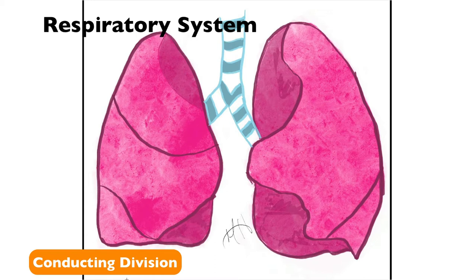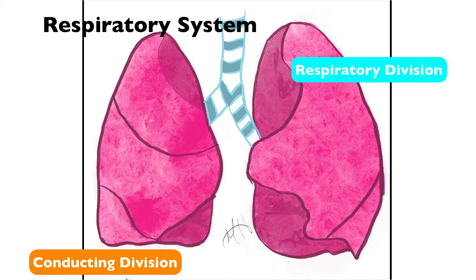In the previous lecture on the respiratory system, we focused on the respiratory division, where gas exchange occurs between the alveoli and the alveolar capillaries. The focus here is going to be on the conducting division — everything else within the respiratory system, or at least the airways that allow air to flow from the atmosphere into our body through our windpipe into our lungs.